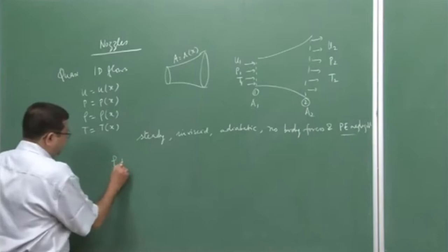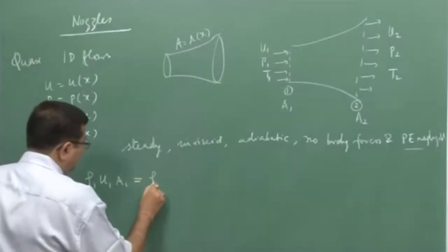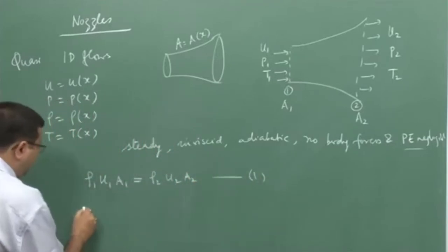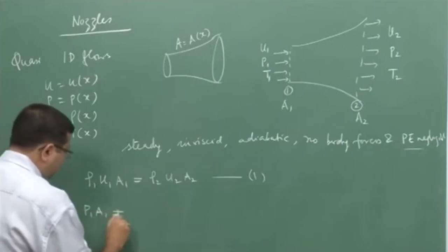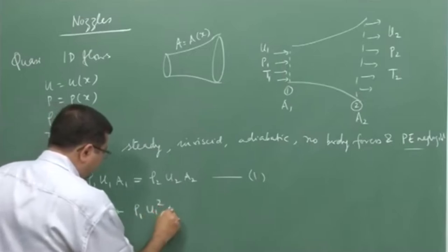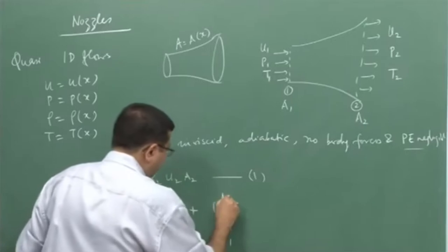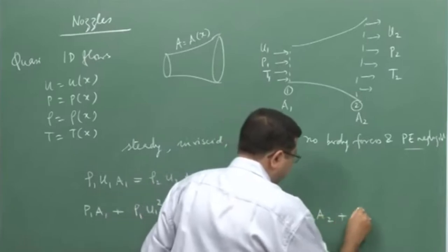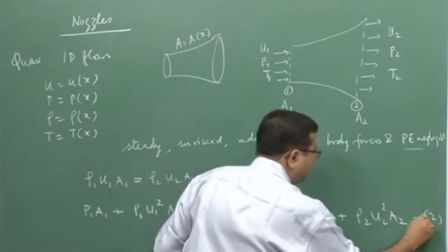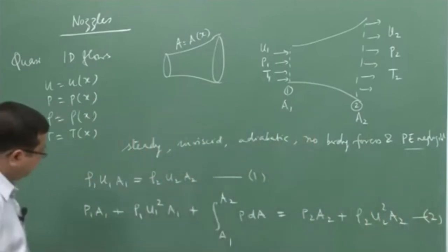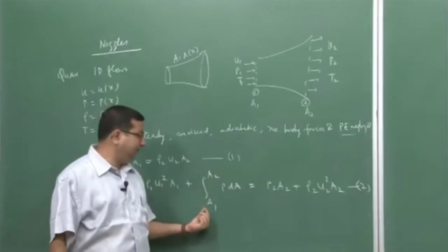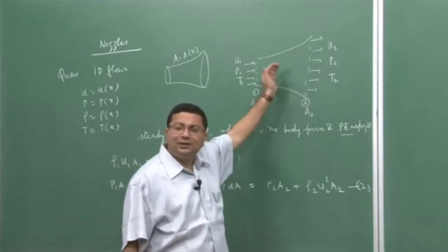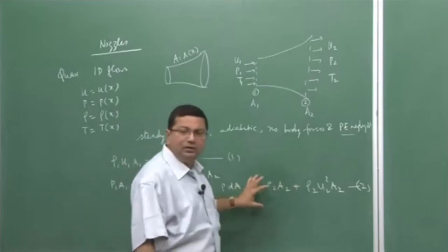The continuity equation was ρ1 u1 A1 = ρ2 u2 A2, called equation 1. The momentum equation was p1 A1 + ρ1 u1² A1 + ∫(A1 to A2) p dA = p2 A2 + ρ2 u2² A2, called equation 2. The integral term — the contribution of surface pressure forces acting on the curved control surface — makes this equation non-algebraic.